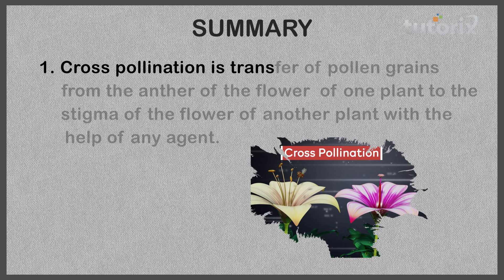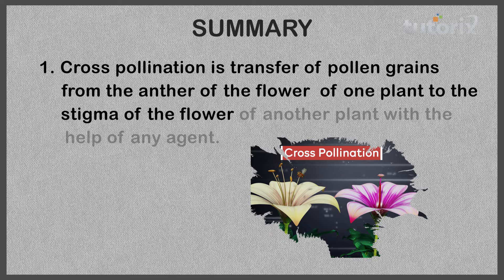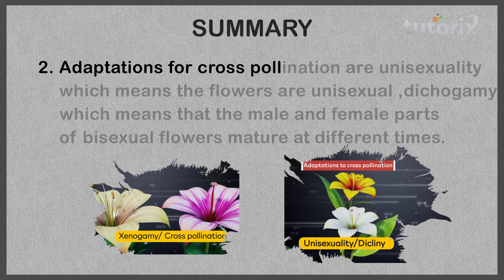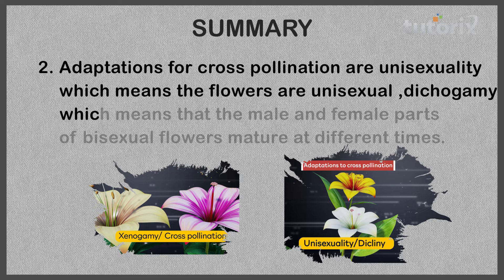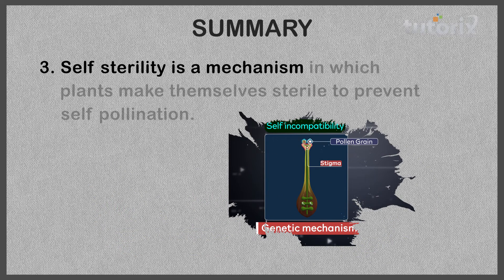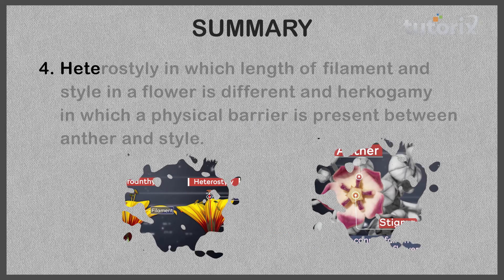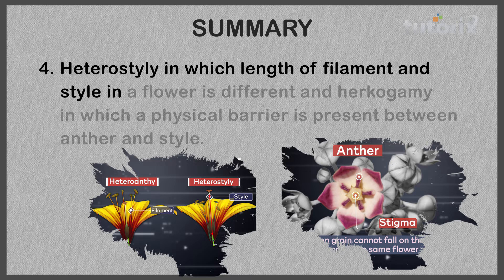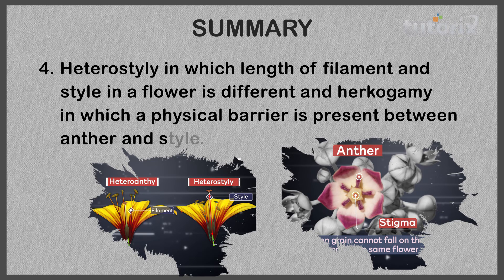Cross-pollination is the transfer of pollen grains from the anther of one plant's flower to the stigma of another plant's flower with the help of any agent. Adaptations for cross-pollination include: unisexuality (flowers are unisexual); dichogamy (male and female parts of bisexual flowers mature at different times); self-sterility (a mechanism in which plants make themselves sterile to prevent self-pollination); heterostyly (difference in length of filament and style); and hercogamy (a physical barrier between the anther and stigma).